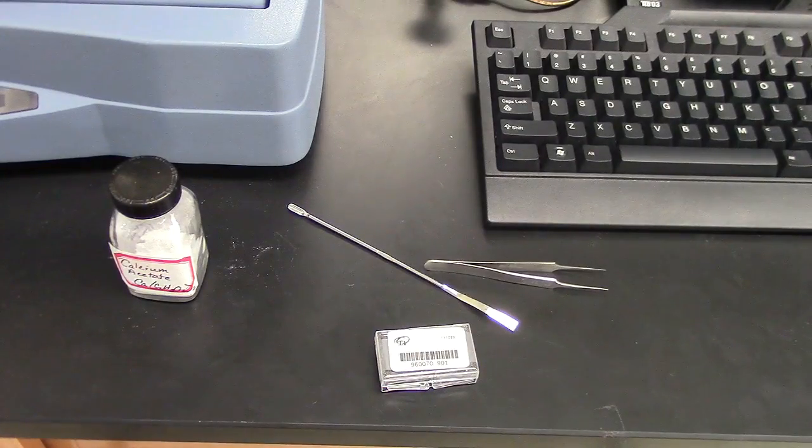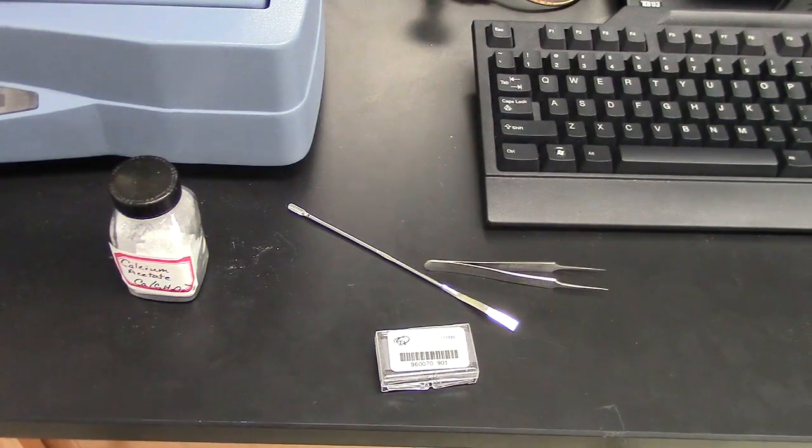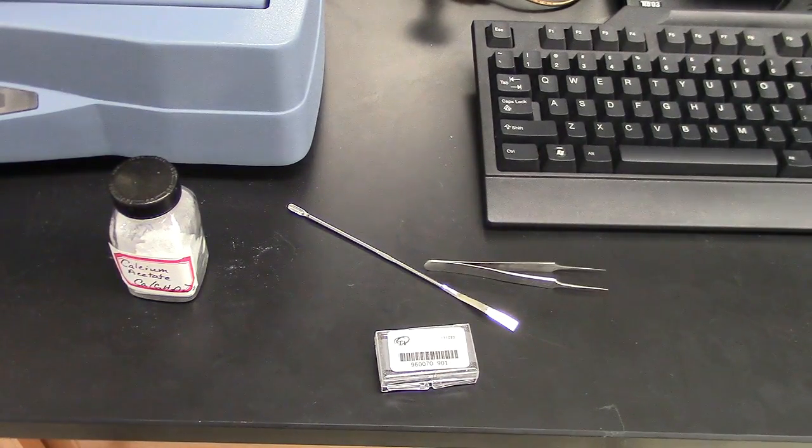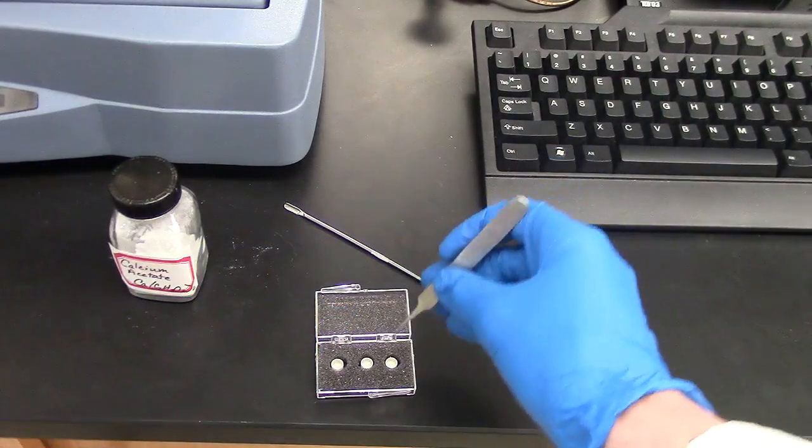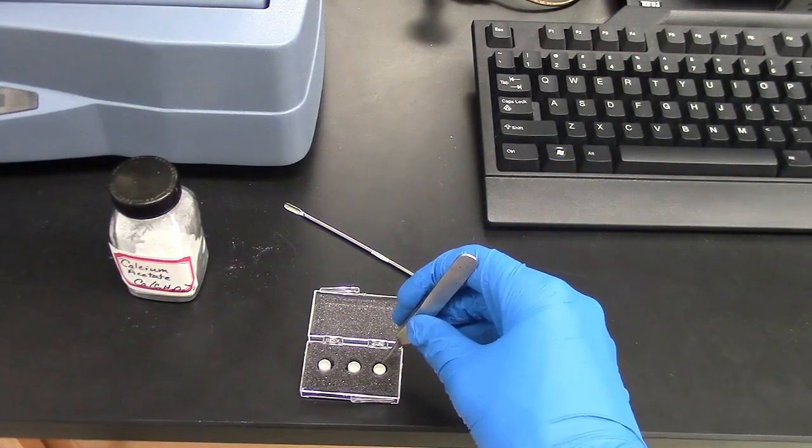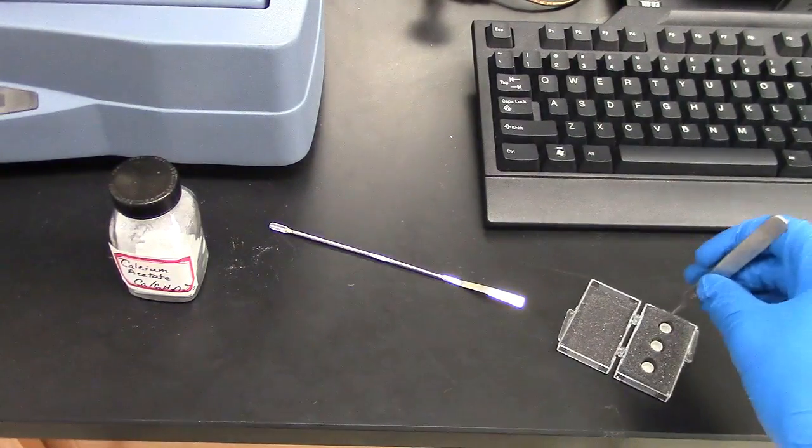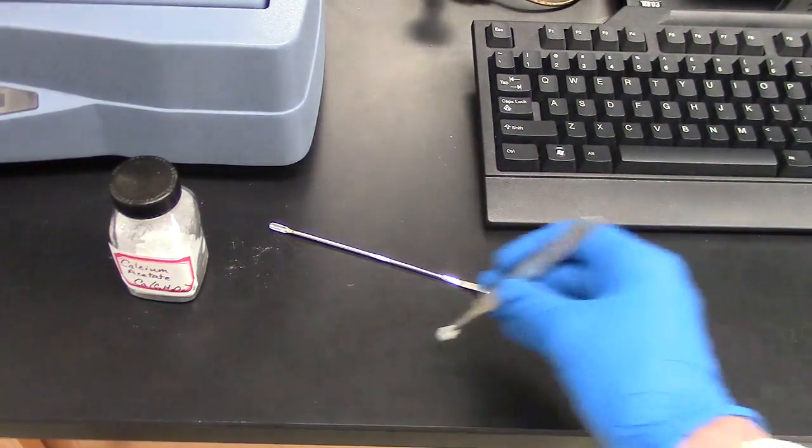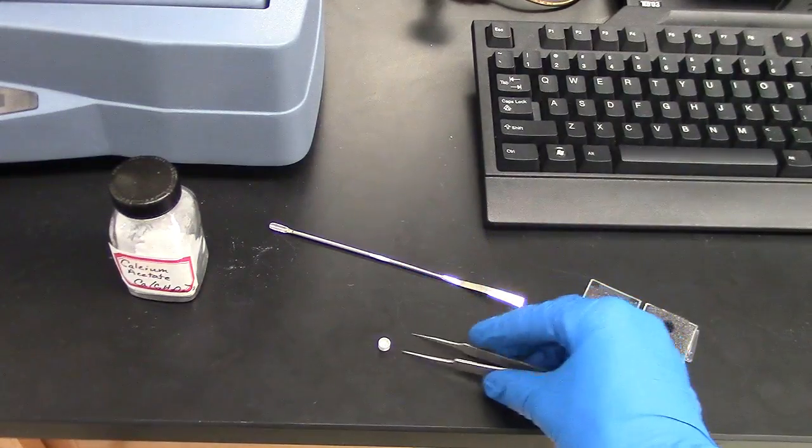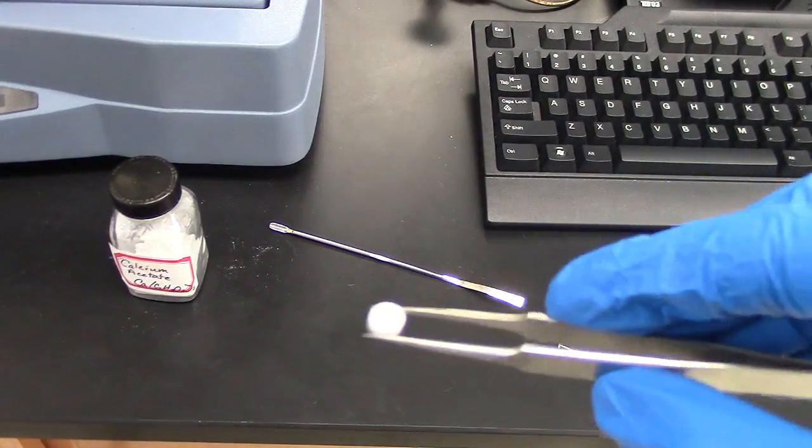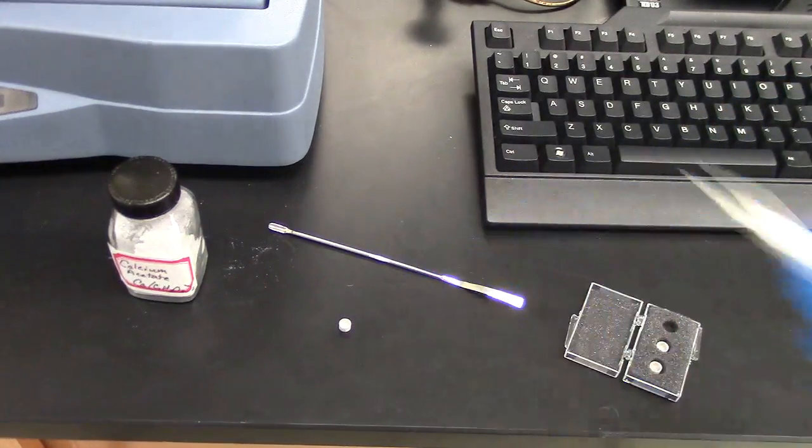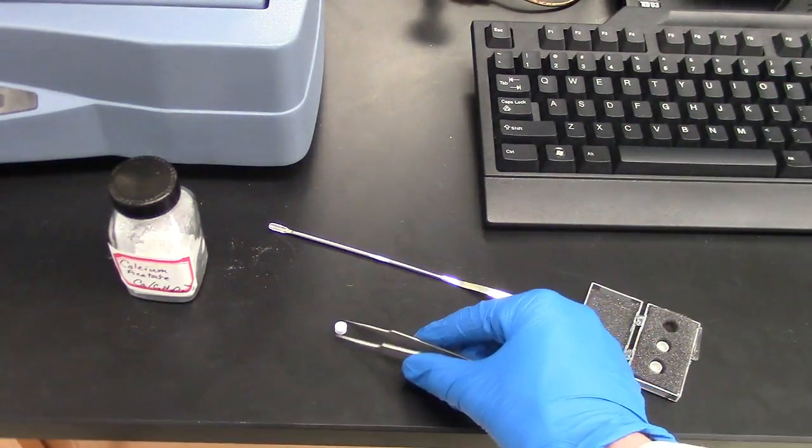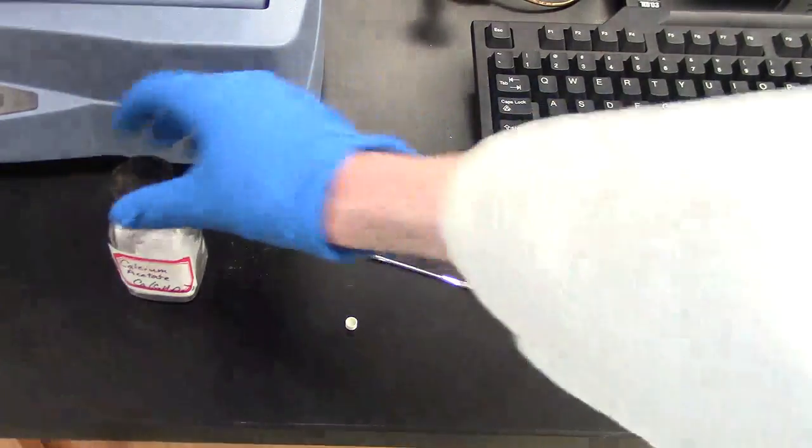After we have ensured that there is enough nitrogen gas flowing to the TGA, we're now ready to prepare our sample. The TGA is basically a very fine balance, a very hot furnace with a very fine balance on the inside. So these are our sample dishes, and it's into these things that we're going to put our sample into.